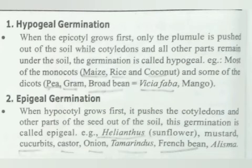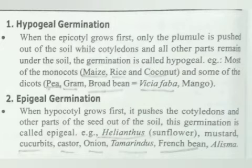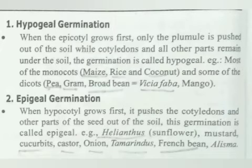The first type of seed germination is hypogeal germination. It is present in both monocot and dicot plants. Examples of monocots include maize, rice, and coconut. Some dicots include pea, garden bean, and mango. These are the plants responsible for hypogeal germination.